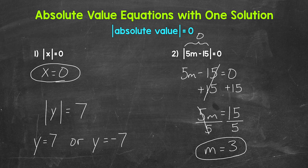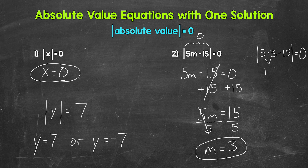And we can check this solution by plugging it in for m. We have the absolute value of 5 times 3 minus 15 equals 0. So 5 times 3 gives us 15. Now we have the absolute value of 15 minus 15. 15 minus 15 is 0, and the absolute value of 0 is 0. So we are correct — m equals 3.